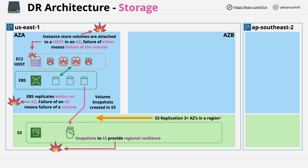S3 can be used to store objects as well, not only snapshots. It's a great place for large media or backups of any kind that need to be regionally resilient. It has different storage classes, and one of these is known as One Zone — with One Zone it isn't regionally resilient because it's not replicated outside a single availability zone. But on the whole, most data stored in S3 by default will be replicated across multiple availability zones.